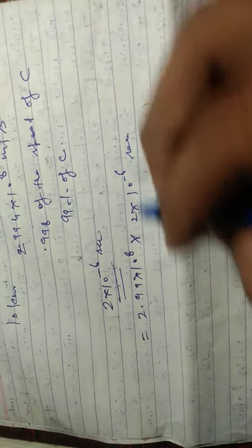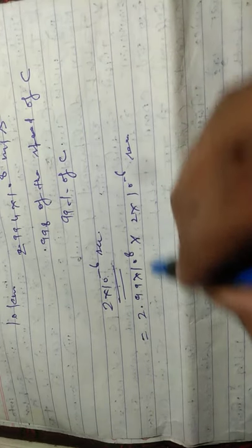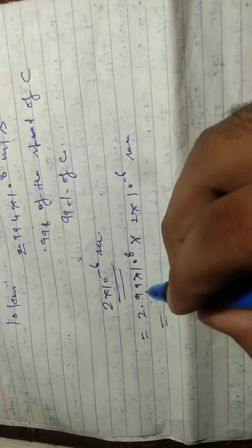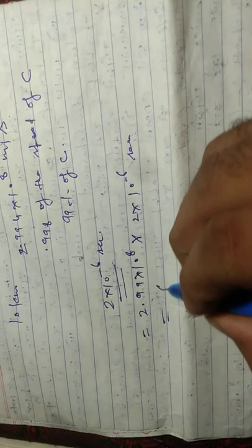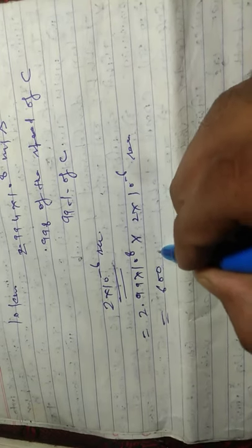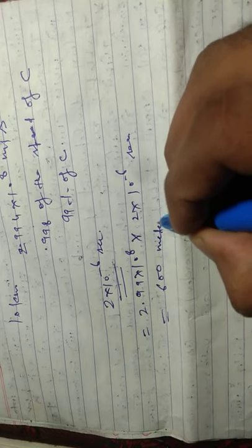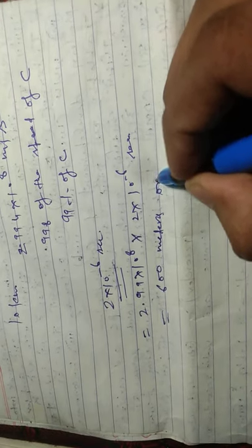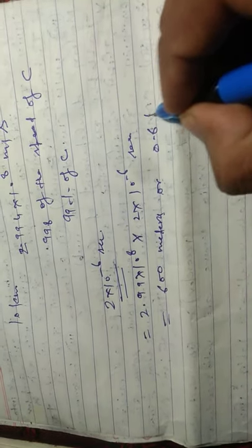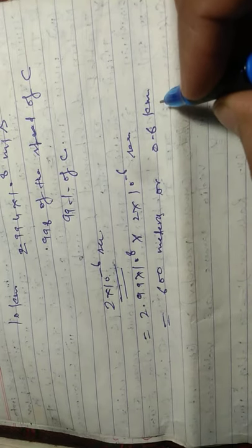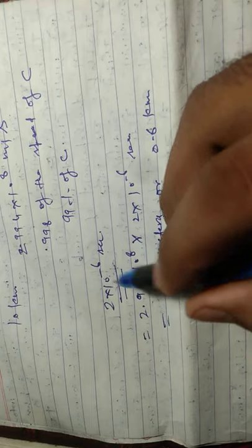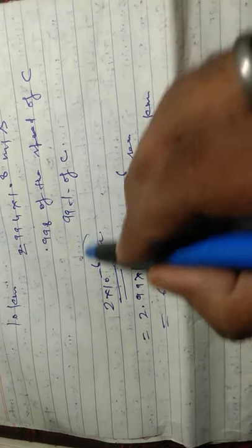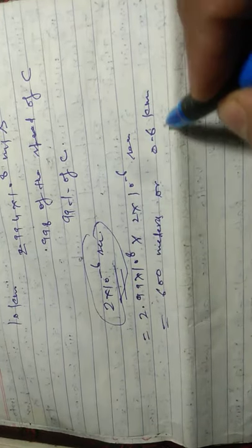This distance traveled by the muon is equal to nearly 600 meters or 0.6 kilometers. So the question is: how can the muon reach Earth if its lifetime is only three times 10^-6?